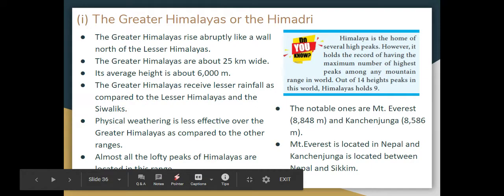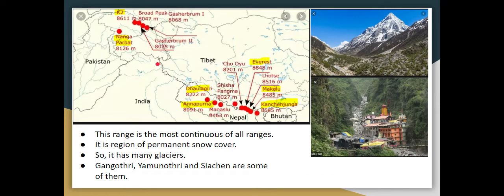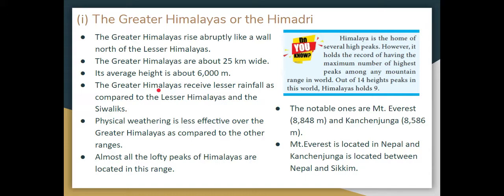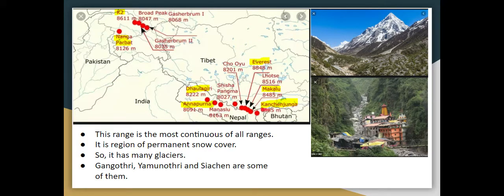Let's go to the third part of the video, slide 36. Greater Himalayas are also called Himadri. The Lesser Himalayas are 25 km wide, with an average height of 6000 meters. Greater Himalayas have lower rainfall compared to Lesser Himalayas and Shivalik, and physical weathering is also lower compared to other ranges. In this range there are high peaks — the most important being Mount Everest in Nepal, and Kanchenjunga on the border.